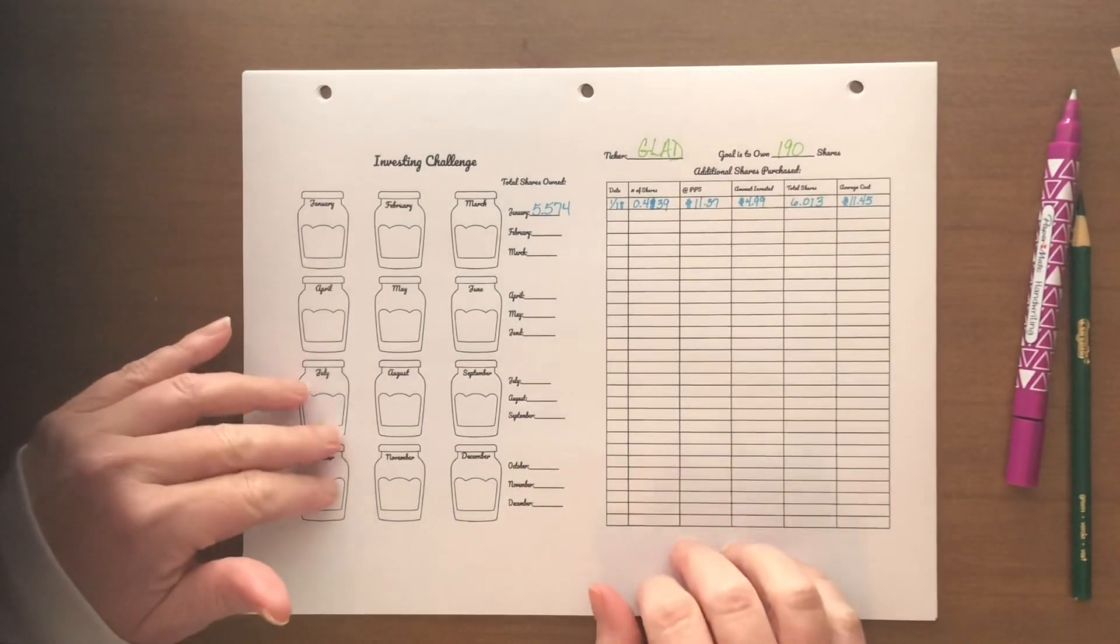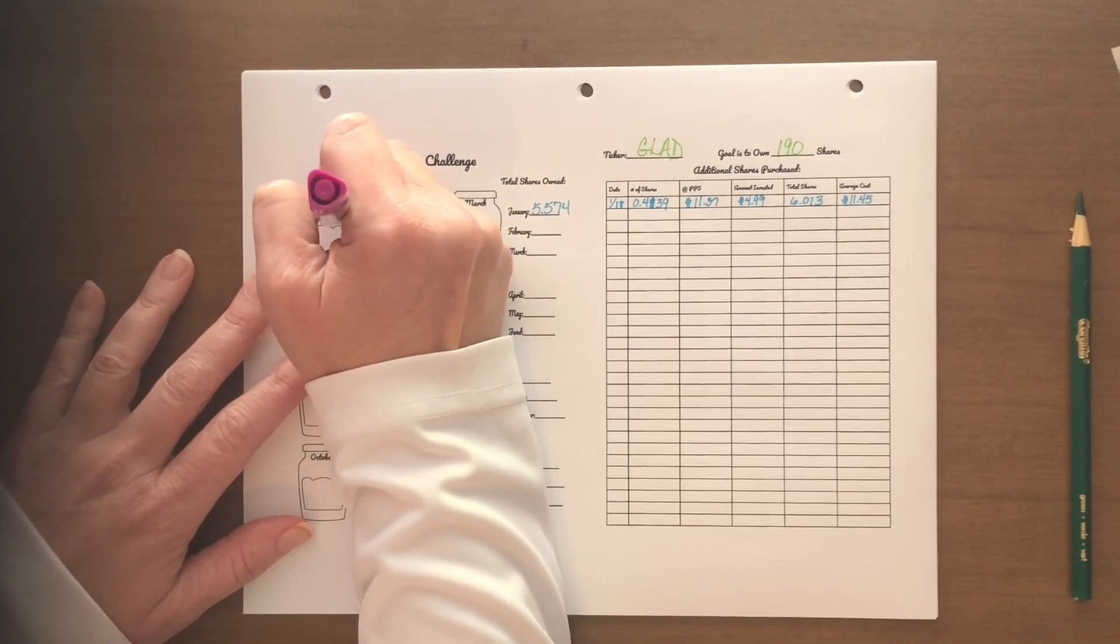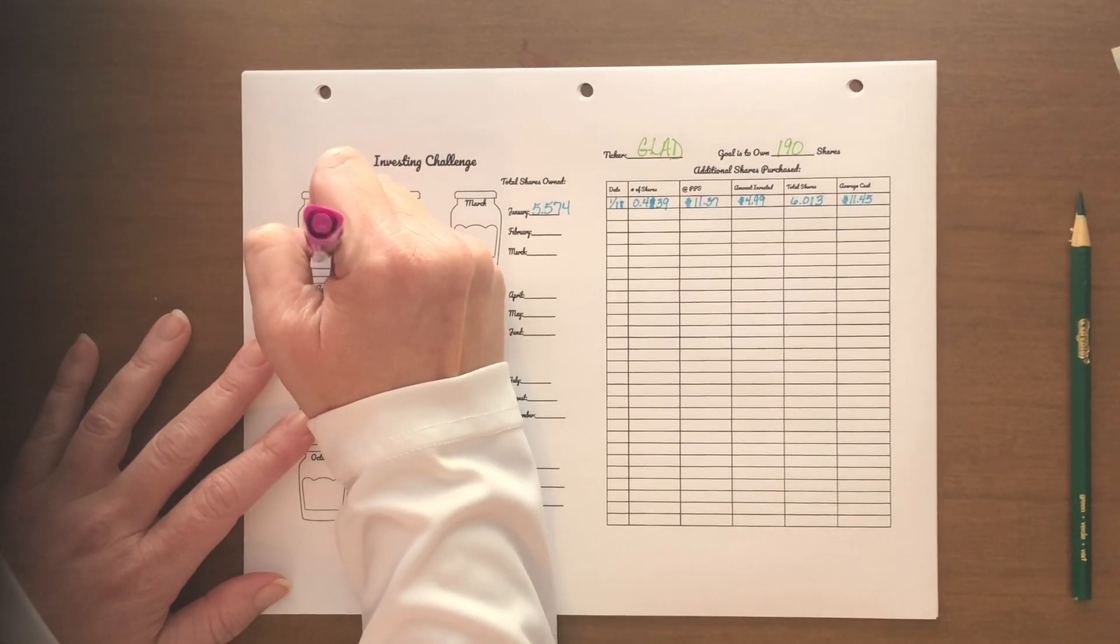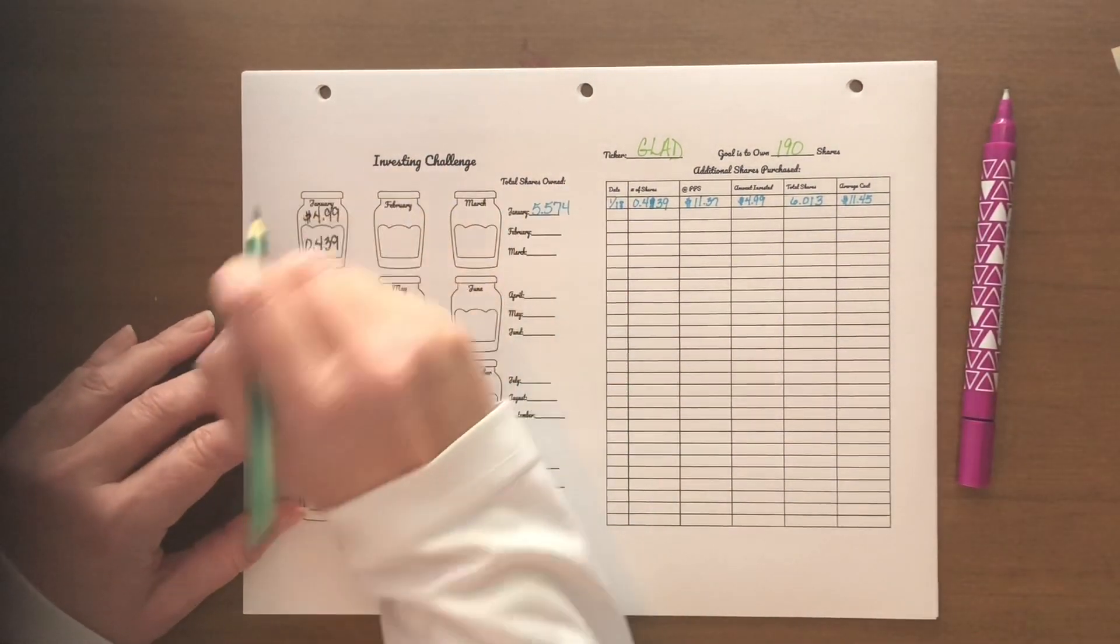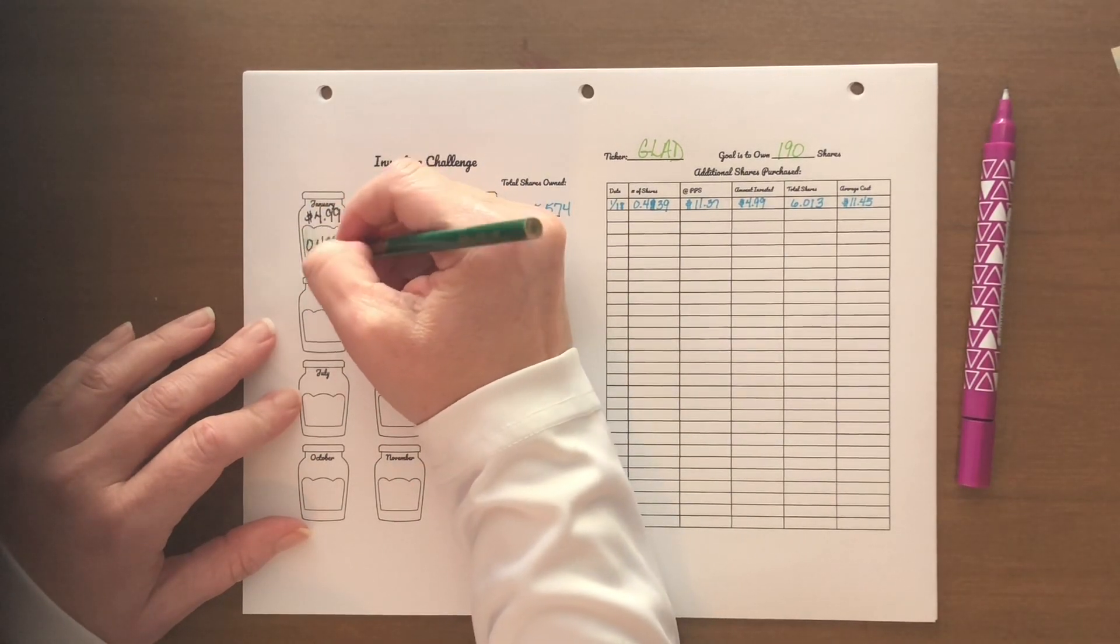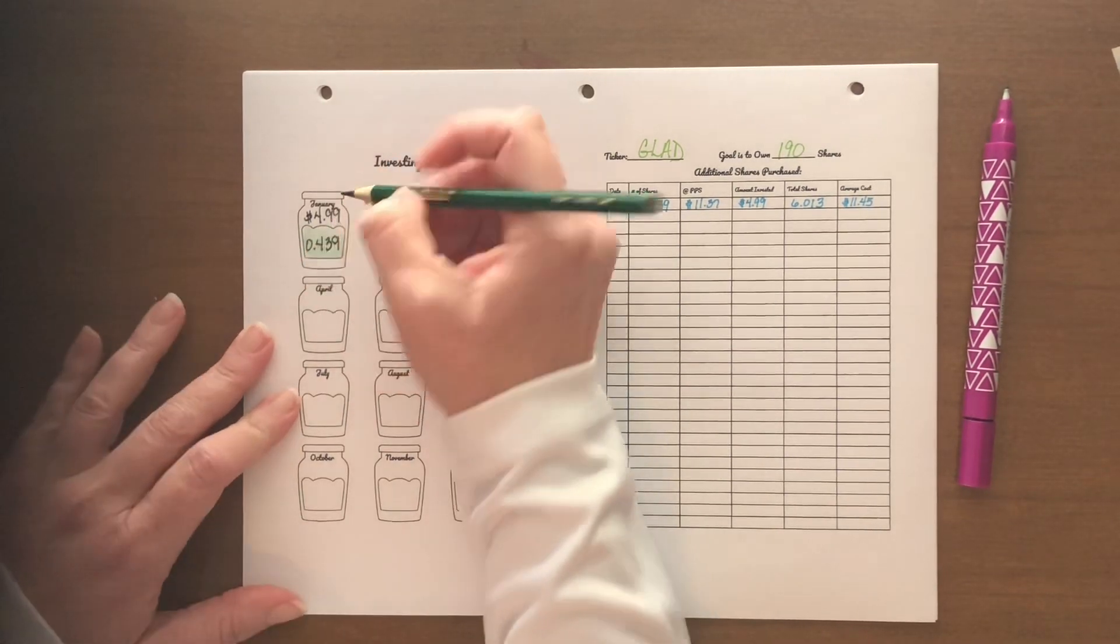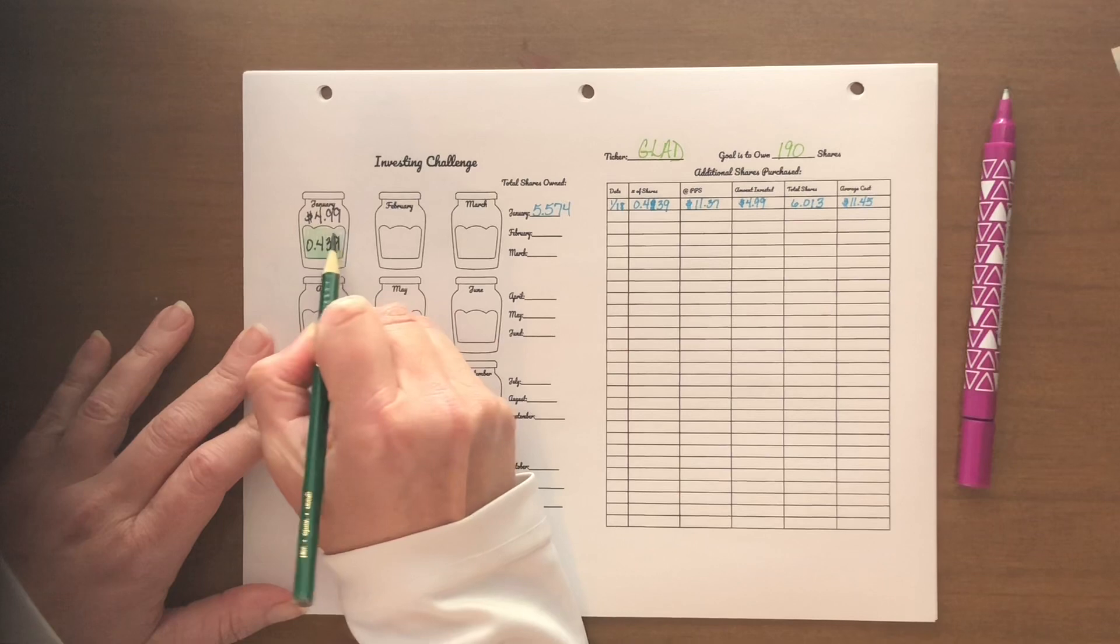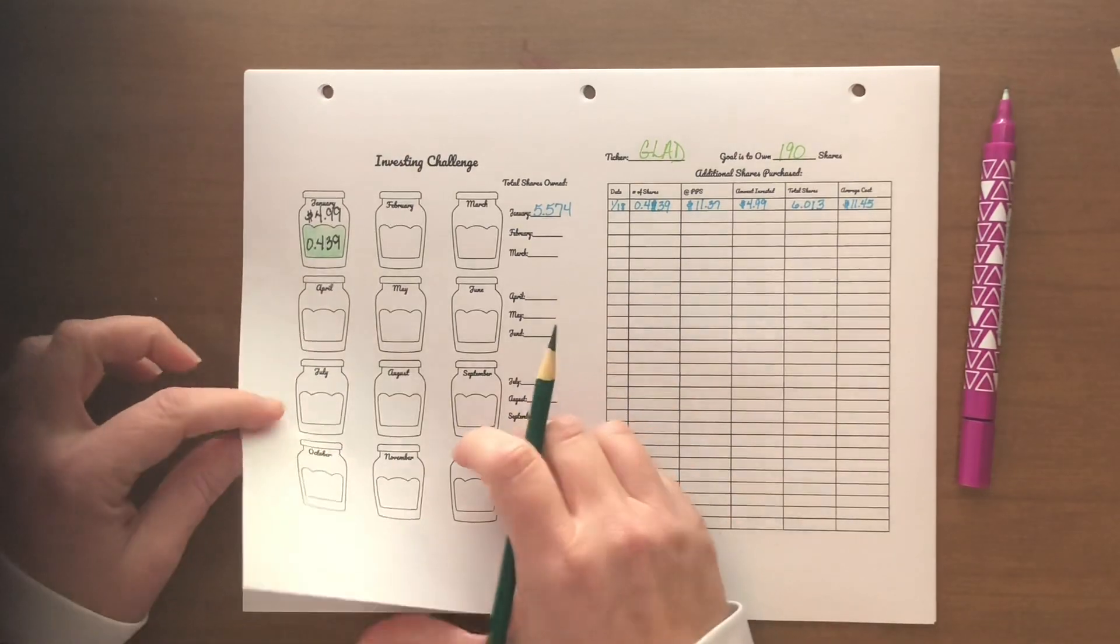Next up is GLAAD. I didn't get the whole $5, again it was only $4.99, and it was 0.439 shares. Almost half a share. Love it when that happens. So I started with basically 5.5 shares plus almost another half share, so I am sitting just over 6 shares of GLAAD. Makes me happy! Moving in the right direction. As my shares increase, so do my dividend payments, which is very important to me.